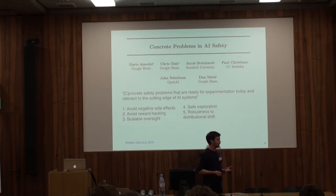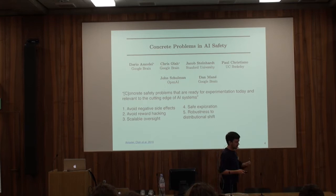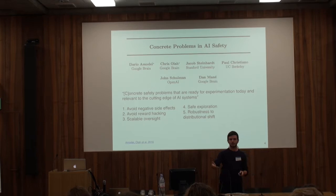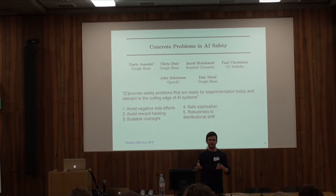The first problem they outlined is avoiding negative side effects. Often when an agent is very good at optimizing for something — even if we succeeded in picking something we actually want, say the cleaning robot is very good at cleaning the house — we still usually want side constraints the agent adheres to. For instance, the cleaning robot shouldn't demolish your furniture in the course of being very effective at cleaning.